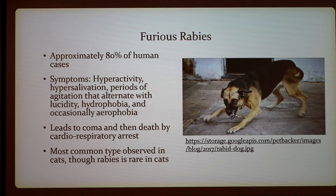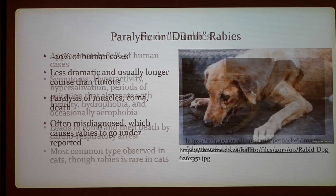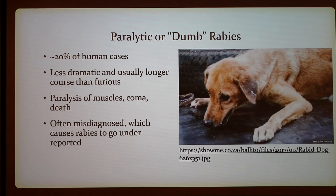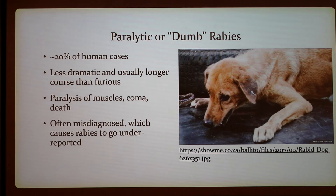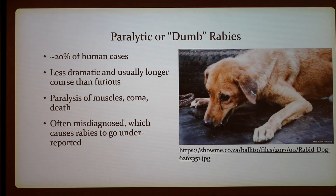The second type is paralytic rabies, sometimes called dumb rabies, accounting for around 20% of human cases. It is less dramatic and usually longer in duration than furious rabies, characterized by paralysis of muscles, coma, and then death. It often goes misdiagnosed, which causes rabies cases to be underreported.